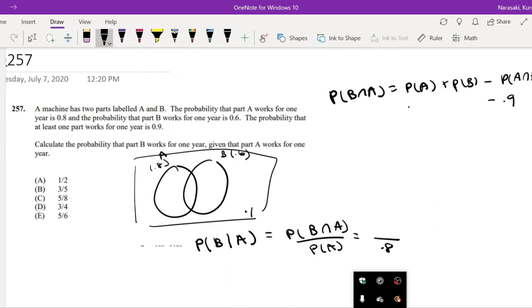And the probability of A is 0.8, the probability of B is 0.6. So then the intersection between A and B is equal to 0.5.